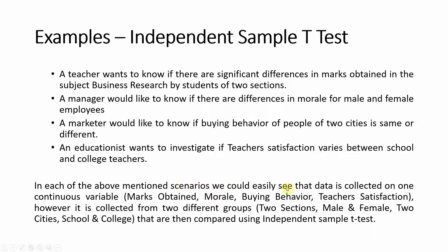In each of the above scenarios, data is collected on one continuous variable — marks obtained, morale, buying behavior, or teacher satisfaction — however it is collected from two different groups: two sections, male and female, two cities, school and college. So in each case you have one dependent variable and data collected from two different groups on that dependent variable.